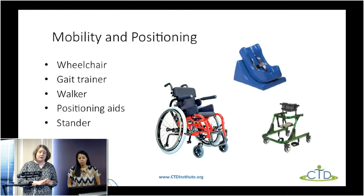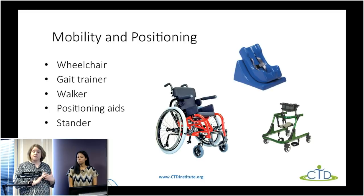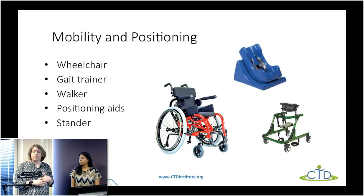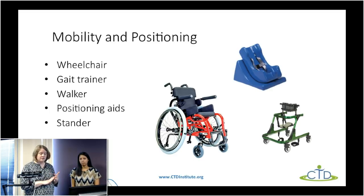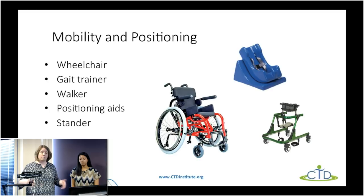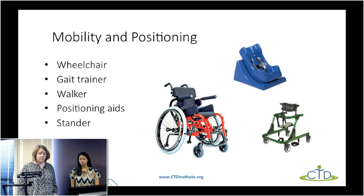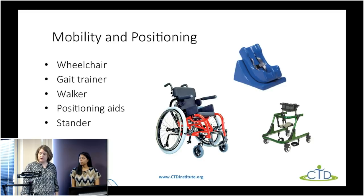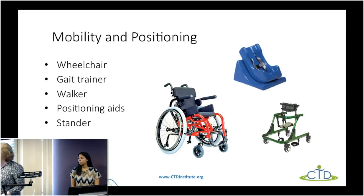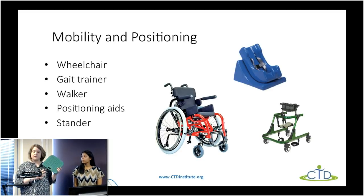The next category is mobility and positioning — tools that help individuals be more mobile if they're not able to walk, and also positioning whether in a chair or a wheelchair. Within mobility and positioning there are wheelchairs, gait trainers which an individual can use to help them walk, walkers, and a stander to be able to spend some time in a standing position. There are also positioning aids, such as the blue Special Tomato Chair on your slide, which provides seating support.